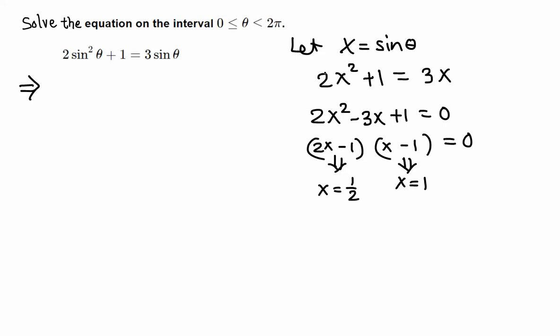In our case, because x is sine theta, so sine theta equals 1/2 or x equals 1 means sine theta equals 1. This is easier because we know sine 90 degrees is 1. That's the only place where sine gets 1. 90 degrees in terms of radians is π/2, so theta equals π/2.